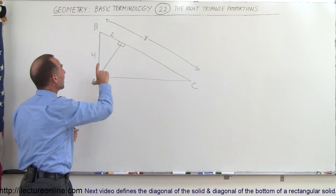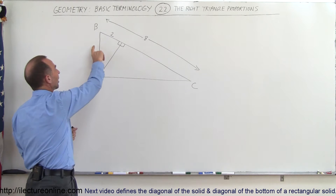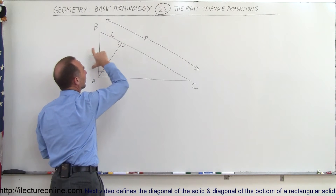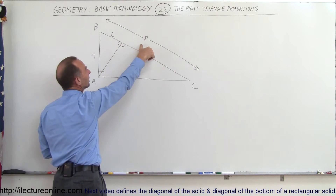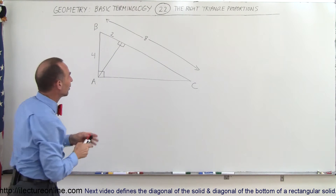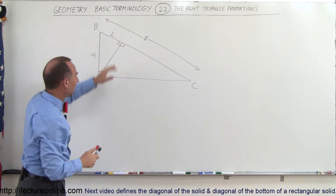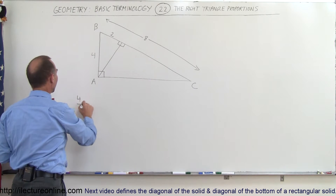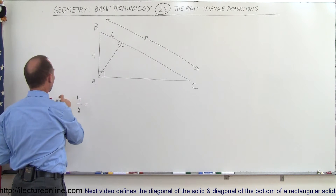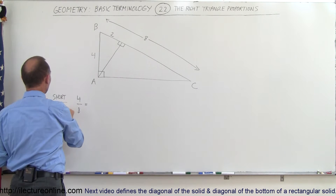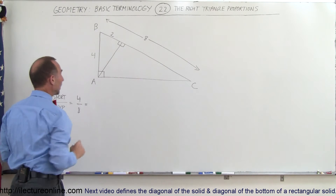So let's say that we take the size of the short side compared to the length of the hypotenuse — we take a ratio there, short side to the hypotenuse of the large triangle. That would be 4 divided by 8. So that's the ratio of the short side divided by the hypotenuse, that's equal to 4 to 8.